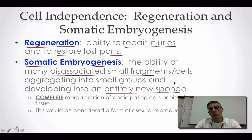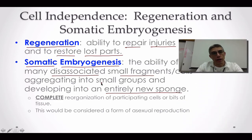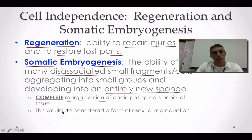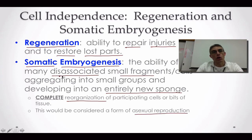We have all these different types of cells within the sponge, but if disassociation should happen, each of those cells may have had a specific job before they disassociated, but now they can actually completely reorganize — some of those cells might change into another type of cell so they can function as a group. This is going to be considered a form of asexual reproduction because a sponge that was totally put together has disassociated and broken apart, producing lots of new sponges as a result.